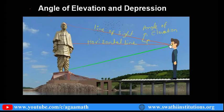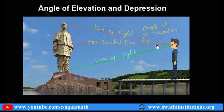In the same way, if the same man is standing here, this is the horizontal line. But when he looks at the bottom — the foot of the statue — the angle changes again downward. This downward line is also called the line of sight. The angle made between the horizontal line and this line of sight, when looking downward, is the angle of depression.